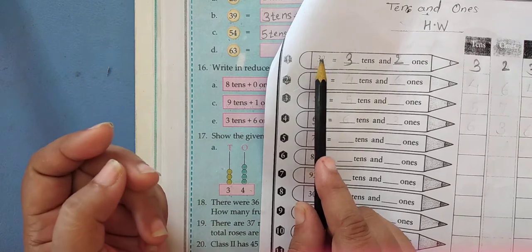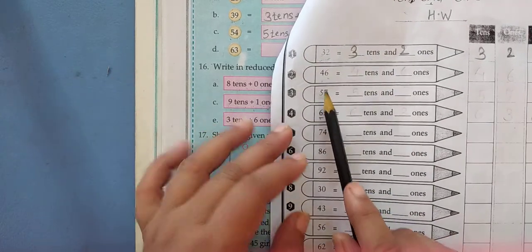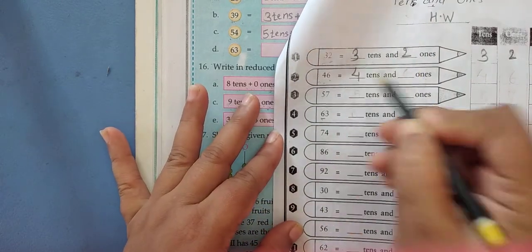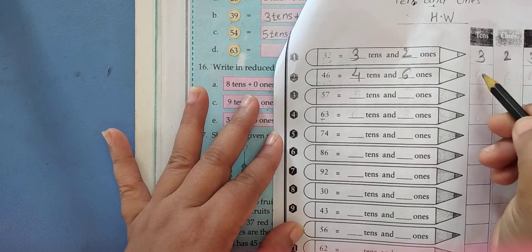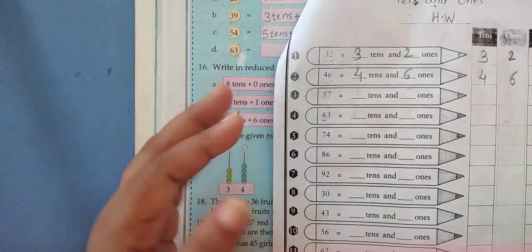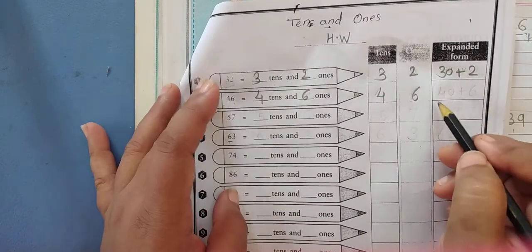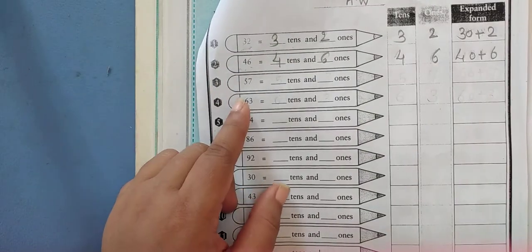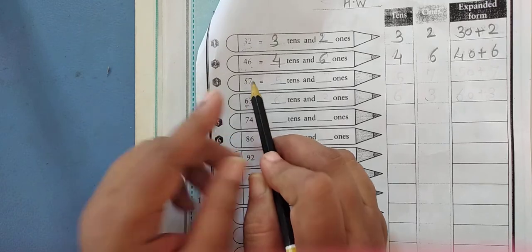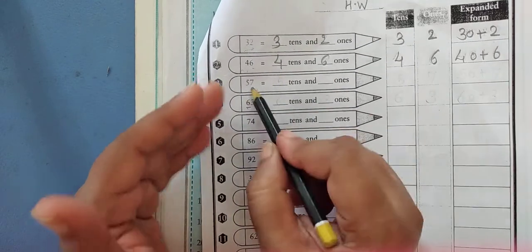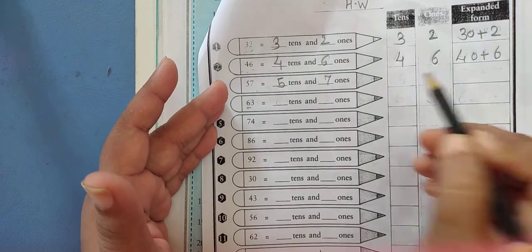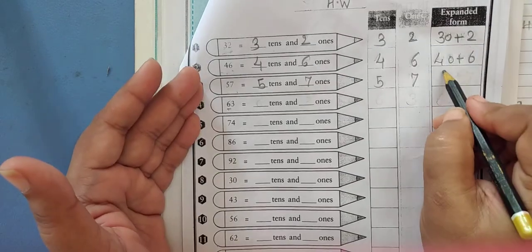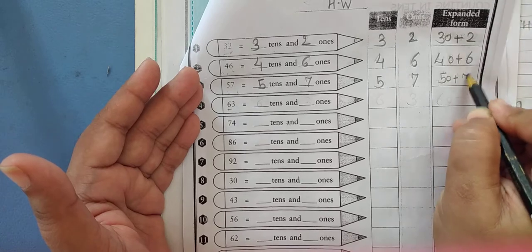We get the answer 32. Now the second example: 46. How many tens are here? 4 tens and 6 ones. 4 tens means 40 plus 6 — that is 46. One more example: 57. First read the number 57. How many tens are there? 5 tens and 7 ones. Write 5 tens and 7 ones. 5 tens means 50 plus 7 — that is 57.